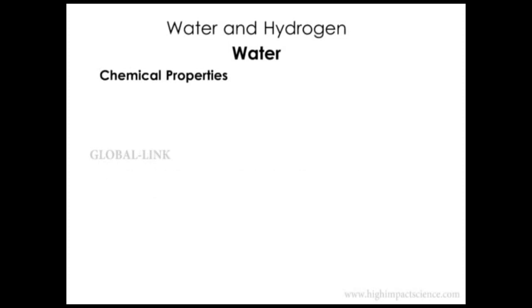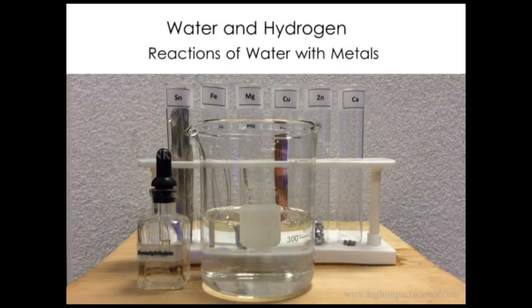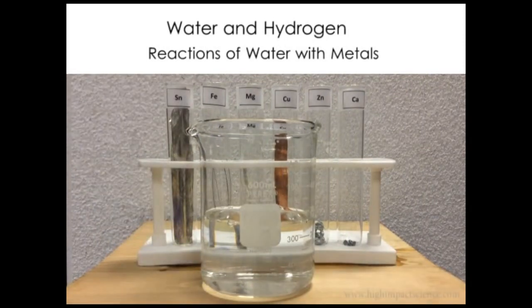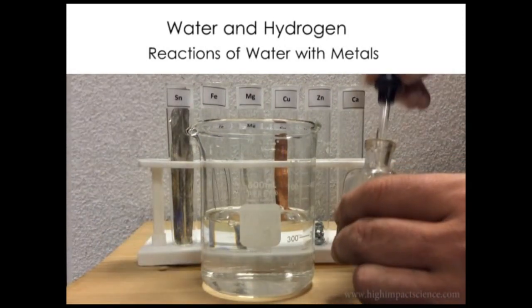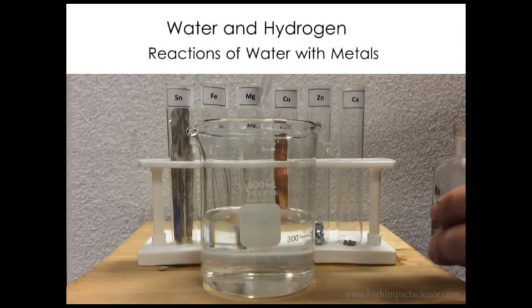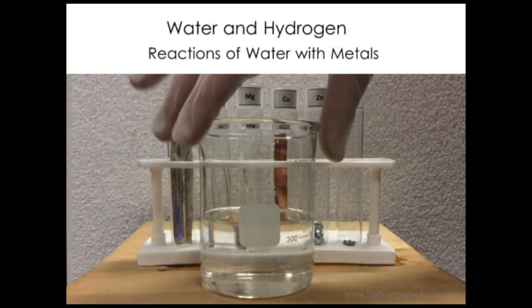Now for the chemical properties of water, we start with reactions with metals. Different metals react at different rates with water. Let us compare the reactions of water with these metals: tin, iron, magnesium, copper, zinc, and calcium. We want to test for the acid-base properties of the product, so we need an indicator. We first add a few drops of phenolphthalein indicator in the water. It is colorless in neutral solutions.